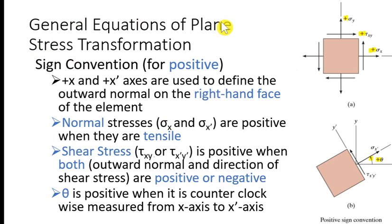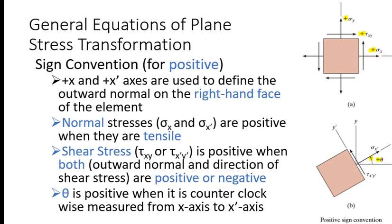The general sign convention for plane stress transformation is very important. To derive the equations we need a consistent sign convention. The positive x-axis and positive x'-axis are used to define the outward normal on the right-hand face of the element. On this right-hand face, the outward normal is along the x'-axis. Sigma_x and sigma_x' are positive when they are tensile.